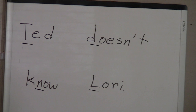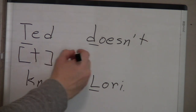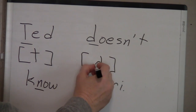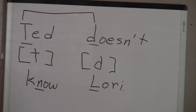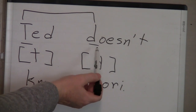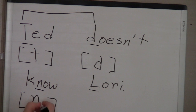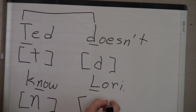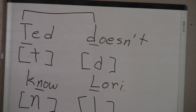Next we have the sounds in 'Ted doesn't know Lori' — all made with the tip of the tongue to the gum ridge. The phonetic symbol for the t sound, no matter how it's spelled, is a lowercase t. The symbol for the d sound is a lowercase d — these two are cognates. The symbol for the n sound is a lowercase n, and the symbol for the l sound, as in Lori, is a lowercase l. Note: phonetic symbols are never capitalized, even if the word itself is capitalized.